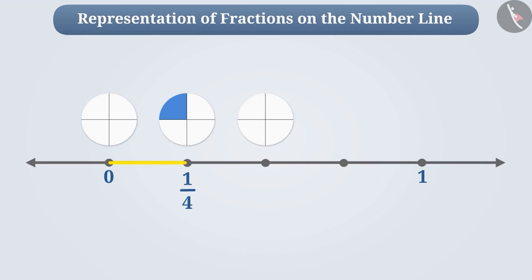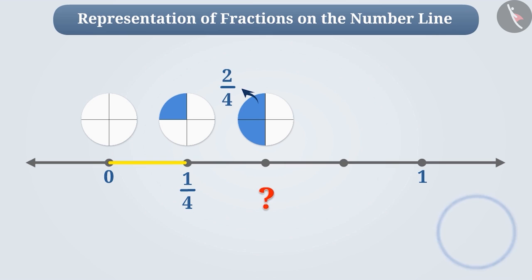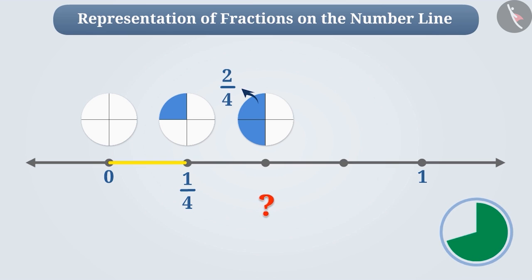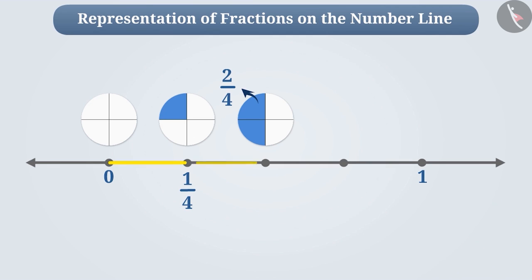Similarly, if we take two parts of the paper, then we will write the fraction for it as two by four. Can you tell how to represent this on the number line? Think for a while. You've got it right. To represent this, we will take two parts on the number line and mark the position as fraction two by four.